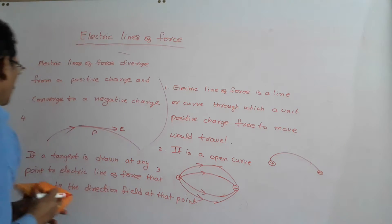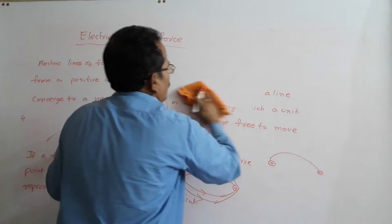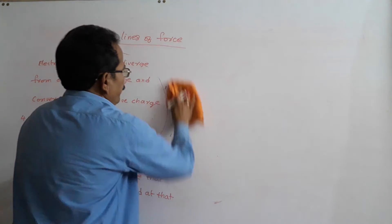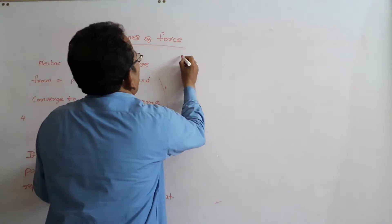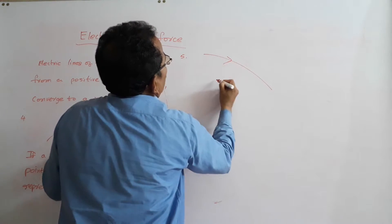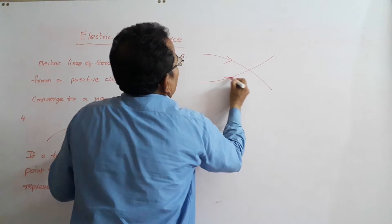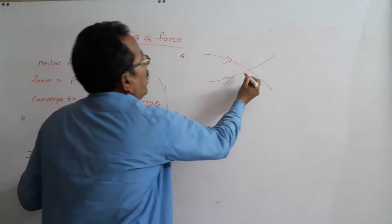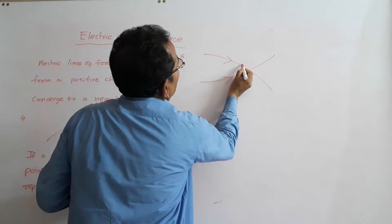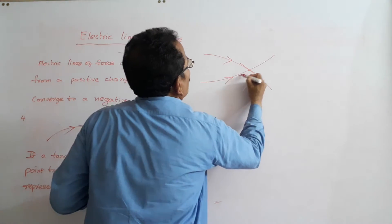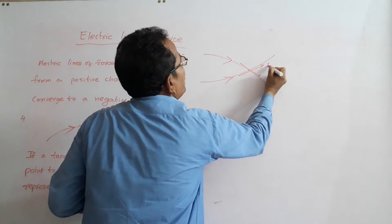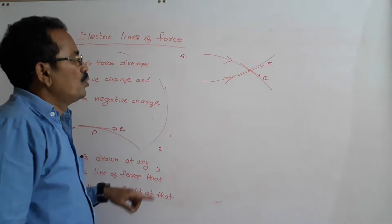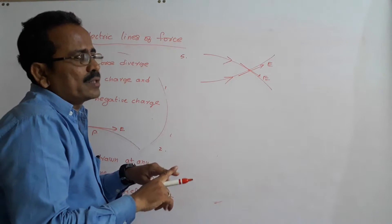Point number 5: Two electric lines of force never intersect. Why? If they intersect, at the point of intersection you can draw two tangents, which means E would have two directions — that is impossible. So two electric lines of force never intersect.